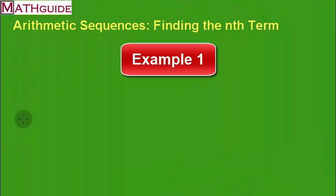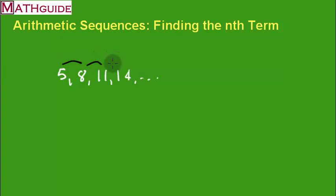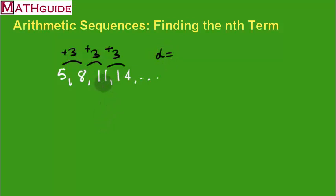Let's take a look at an example. Here are some numbers separated by commas — this is called a sequence. We want to determine: is this an arithmetic sequence? If it is arithmetic, the difference between consecutive numbers is always going to be the same. Subtracting these two I get three, subtracting the next two consecutive numbers I get three, and the next pair also gives three. So this is definitely an arithmetic sequence because the common difference — the difference between consecutive pairs — is common. It's the same: it's three.